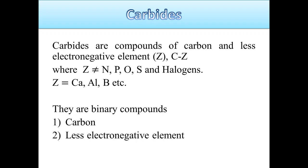Carbides are the compounds of carbon and a less electronegative element — for example, calcium, aluminium, or boron — elements having less electronegativity than carbon. Elements having more electronegativity than carbon, such as nitrogen, phosphorus, oxygen, sulfur, and halogens, are not capable of forming carbides. So carbides are compounds formed by C and Z, where C means carbon and Z means a less electronegative element.